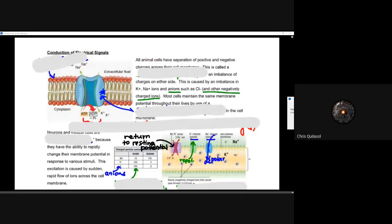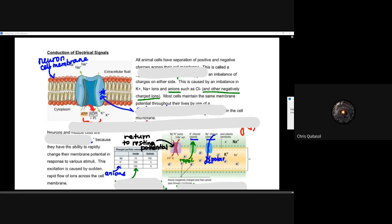So how does an electrical signal get conducted and passed on from one cell to the next? If you recall back to ATP synthesis, that electrochemical gradient was formed within one single cell. But animal cells differ in that there's a separation of positive and negative charges across their cellular membranes. This is called the membrane potential — the ability for an electrochemical gradient to be formed — an imbalance of charges on either side.